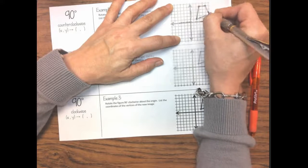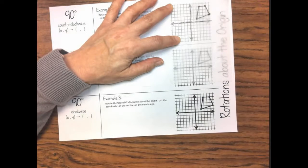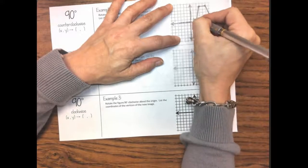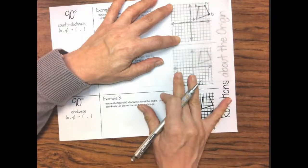Now for this example the quadrilateral is not named, which means we don't have letters on each endpoint. I'm going to go ahead and do that just because it makes it a lot easier when you go and do the actual transformation.